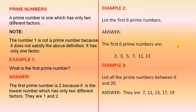Example 1: What is the first prime number? The first prime number is two because it is the lowest number which has only two different factors. They are one and two.